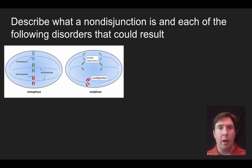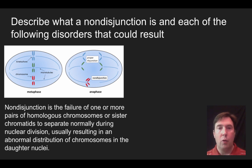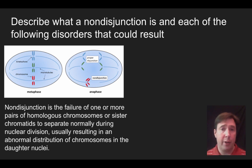Non-disjunction is the failure of one or more pairs of homologous chromosomes or sister chromatids to separate normally during nuclear division, usually resulting in an abnormal number of chromosomes in the daughter nuclei. It's a pretty generic definition, but let's parse it out a little bit.